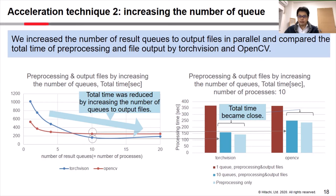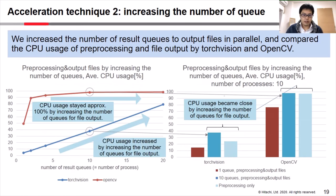Next, we compare the CPU usage after increasing the number of result queues. Please look at the left figure. It indicates the average CPU usage of preprocessing and output files by increasing the number of queues, where the x-axis represents the number of result queues equal to the number of processes. In the TorchVision case, CPU usage increased by increasing the number of queues for file output. On the other hand, in the OpenCV case, CPU usage stayed at approximately 100% by increasing the number of queues.